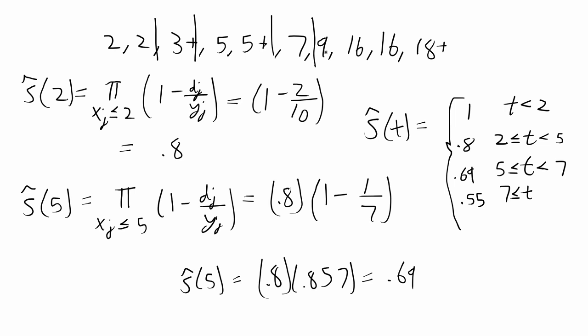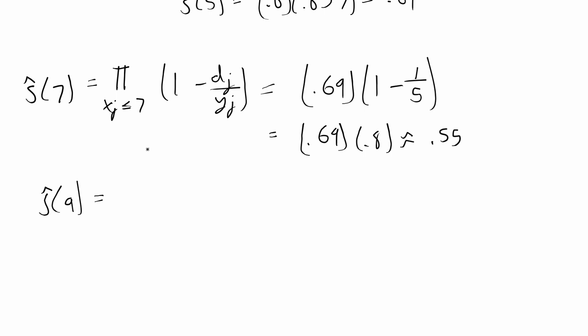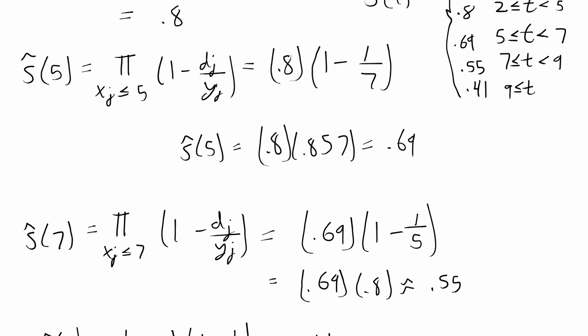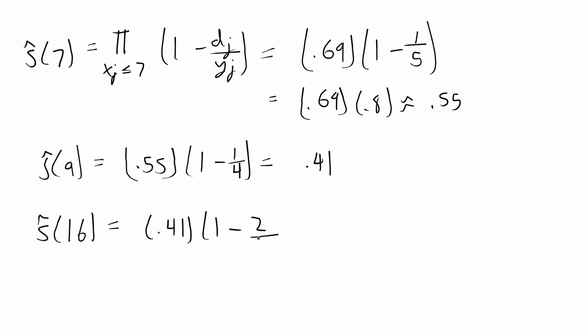The next event occurs at t = 9. S(9) = 0.55 × (1 − 1/4) ≈ 0.41, so the survival function drops to 0.41 for t ≥ 9. Then two events occur at t = 16. S(16) = 0.41 × (1 − 2/3) ≈ 0.14, giving 0.14 as the estimated survival probability for t ≥ 16.